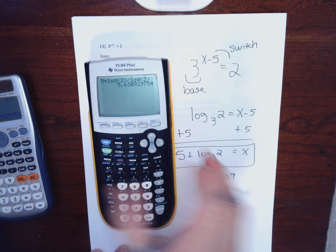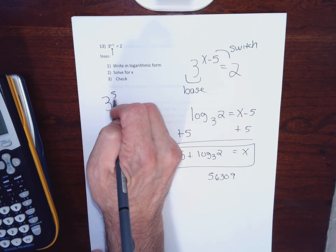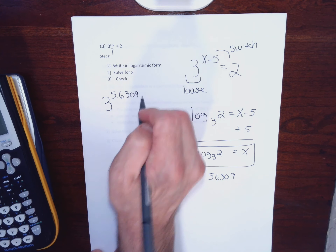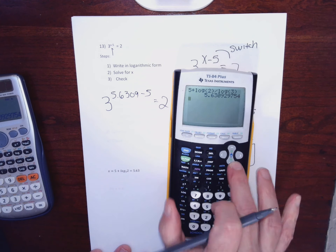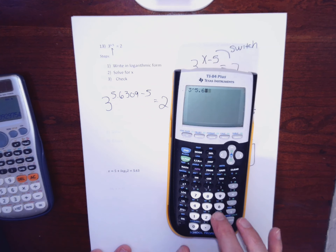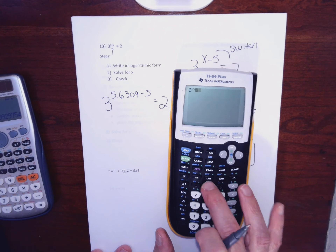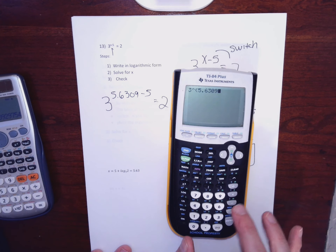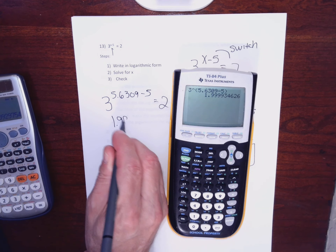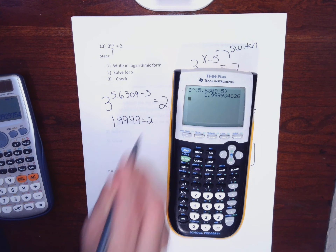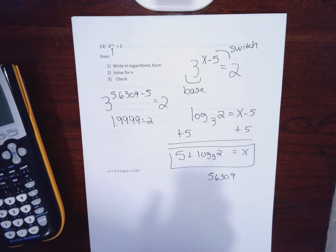Now I want to check. I go to the original problem and change x to what I found. So is 3 to the 5.6309 minus 5 equal to 2? It won't be exact, but it'll be close. 3 exponent parentheses 5.6309 minus 5 parentheses — if your calculator shows the exponent, you don't need the parentheses. You don't have to give a decimal answer. Checking is just a safety net so you know you're not writing down a wrong answer.